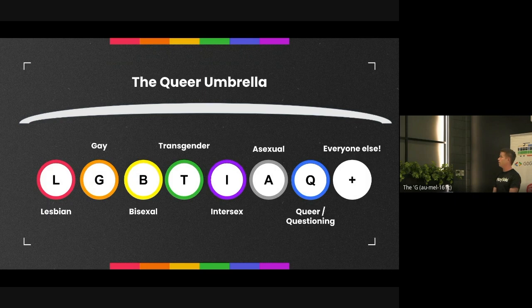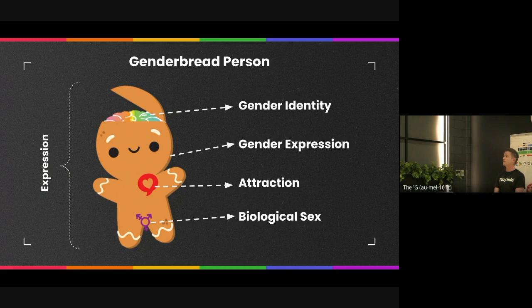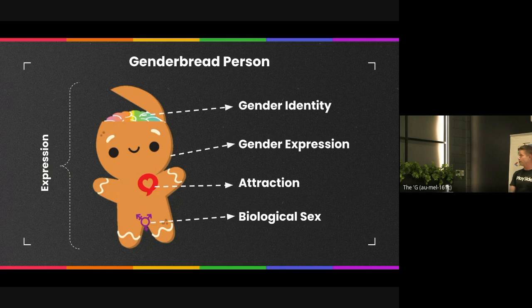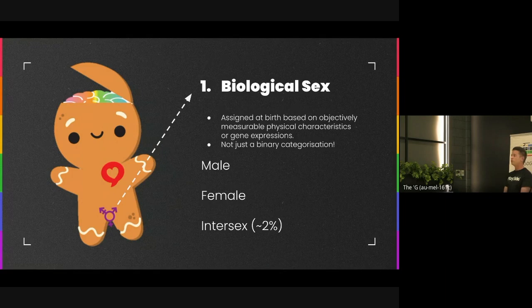I would like to introduce you to a tool I have found incredibly helpful when it comes to understanding all the different types of diversity that fall under the LGBTIAQ+ umbrella. We have four different facets of identity which actually fall under this acronym: gender identity, gender expression, attraction — sometimes known as sexual orientation — as well as biological sex.